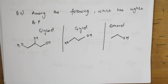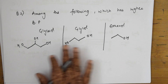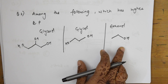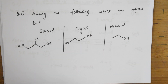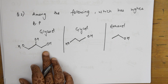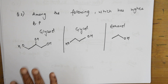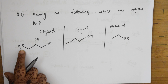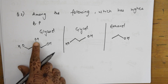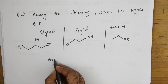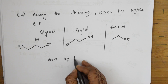Next question: among glycerol, glycol, and ethanol, which has the higher boiling point? The important concept here is that more hydrogen bonds means a higher boiling point. Glycerol can form hydrogen bonds from three -OH sites, glycol from two sides, and ethanol from only one side.